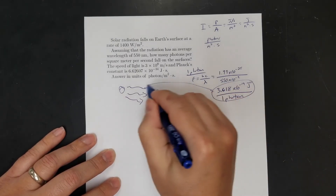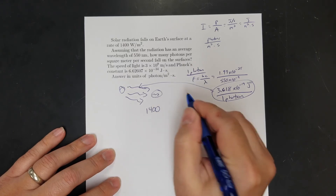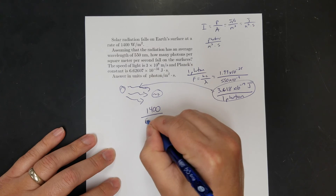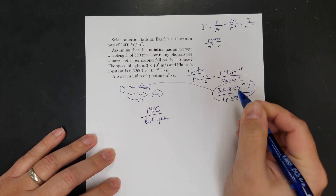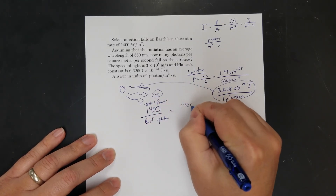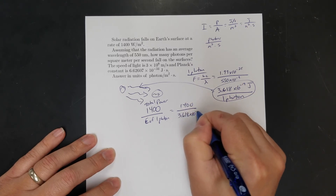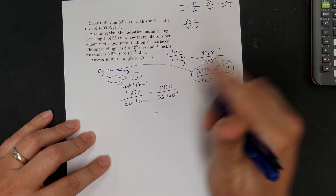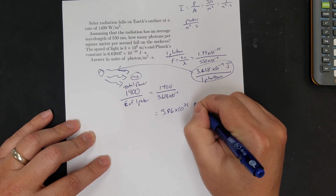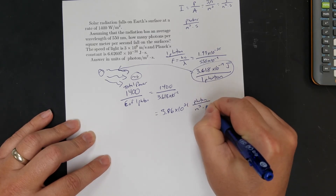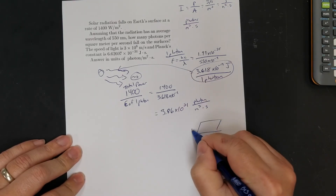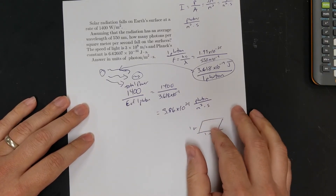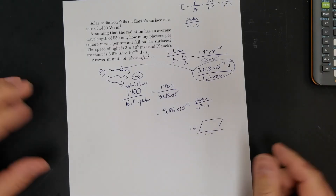Now divide the total intensity by the energy of one photon: 1,400 joules/second/m² ÷ 3.618×10⁻¹⁹ joules/photon = 3.86×10²¹ photons per square meter per second. Really, the whole topic only uses two equations: E = hf or E = hc/λ, plus v = fλ. Photon problems are pretty simple once you see the pattern.